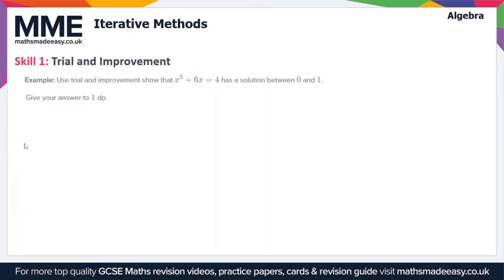Welcome to the Maths Made Easy tutorial on iterative methods. This is going to be a couple of videos on this topic, and the first one here we're going to look at a skill called trial and improvement. So we've got this example: we have to use trial and improvement to show that x³ + 6x = 4 has a solution between 0 and 1.